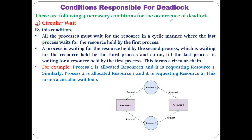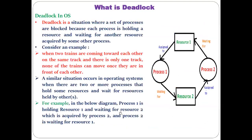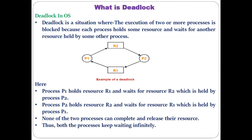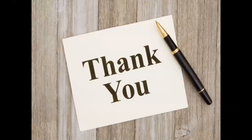If any of these four conditions occur, a deadlock situation can easily occur in the system, and the operating system has to handle these deadlock situations. That is all about what exactly is deadlock and because of which different conditions it can occur. In the next lecture, we will discuss how deadlock can be detected and how deadlock can be handled. Thank you all.